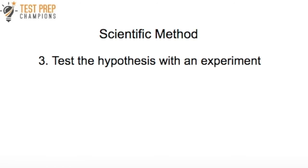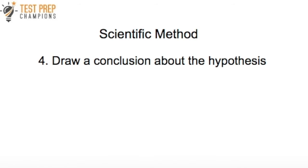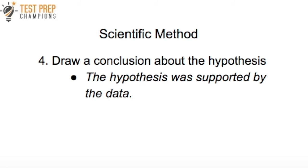Step number three: test the hypothesis with an experiment. So my experiment was to try new batteries and to see if the TV would turn on. Step number four: draw a conclusion about the hypothesis, and you want to see if the data that you get from your experiment supports the hypothesis or if it does not support the hypothesis. In our example, I pressed the button and the TV turned back on, so the data supported the hypothesis that the TV wasn't working because the batteries were dead.